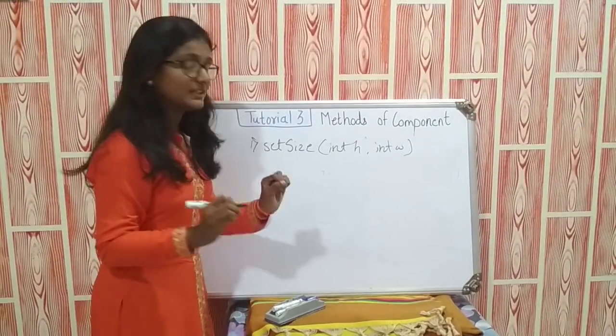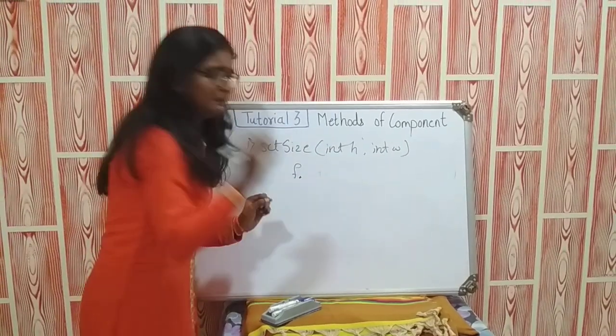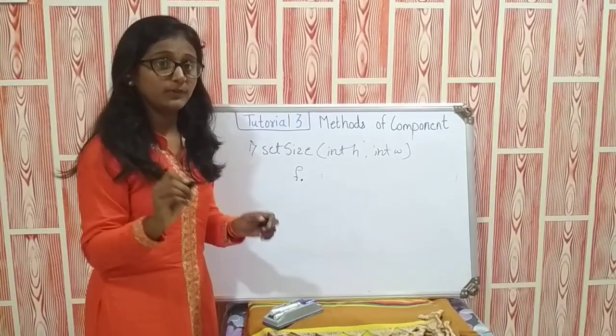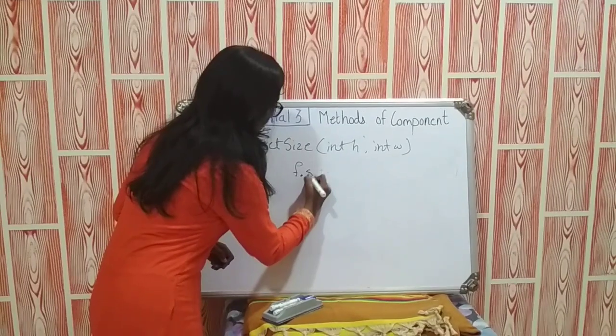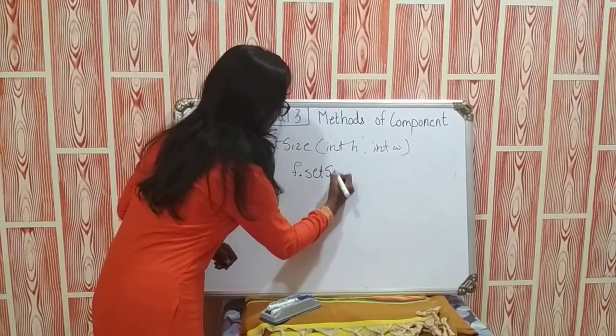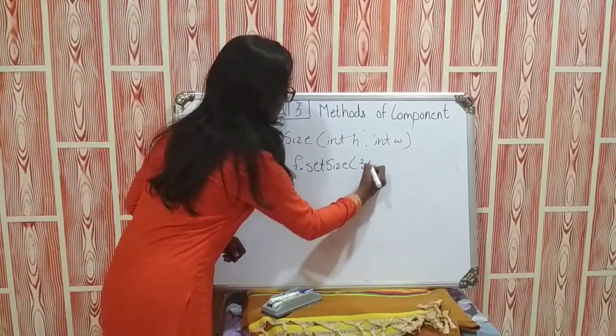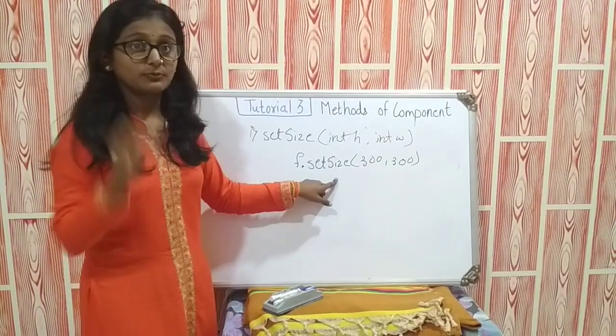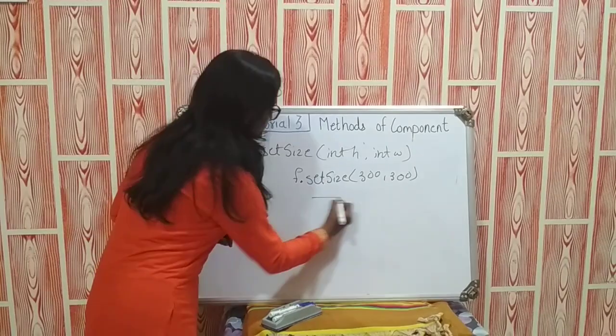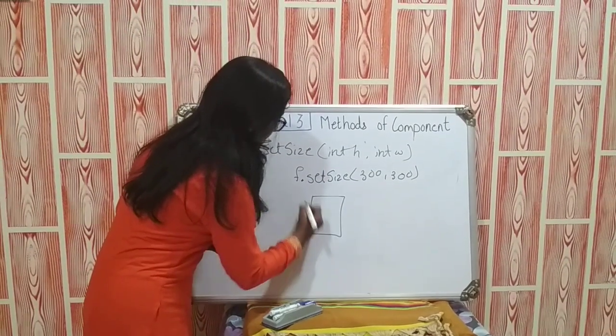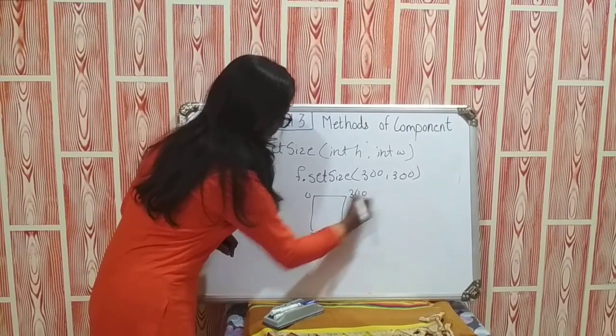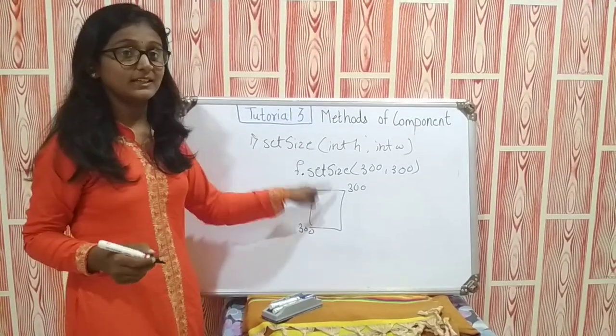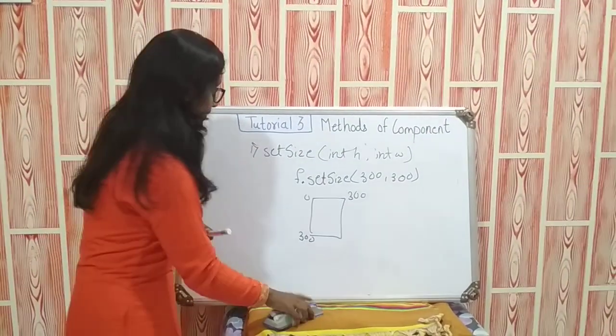How I will use in the program, as F is the object of a frame class, F dot setSize. And I will take it as 300 and 300. That means frame will be of size 300 and 300. It is used to set the size of a frame.